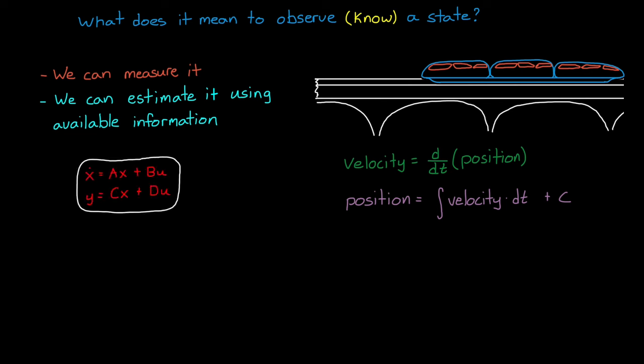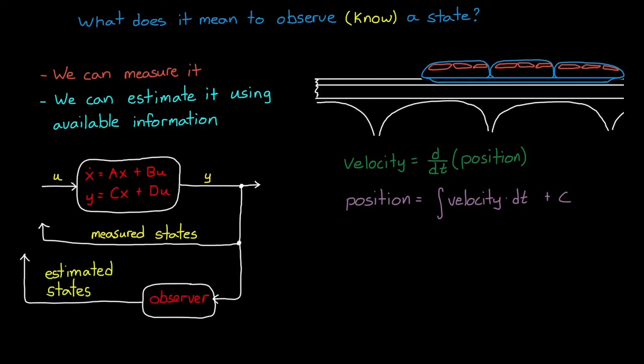This is why a system can still be observable even if the output y isn't full state. That is, it doesn't contain a direct measurement of every state variable. Estimating states is a good way to reduce the hardware complexity of your system. Strategically measure only the necessary states with sensors and then just estimate the rest using an observer, like a Kalman filter.